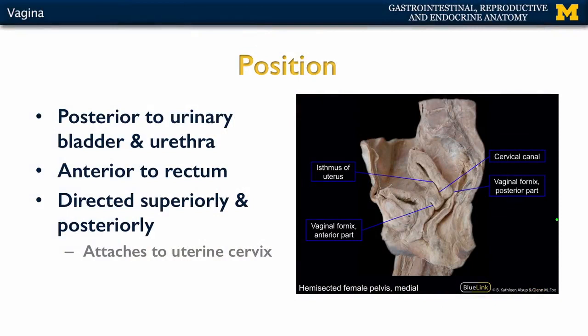Let's review the position — we've seen this image a few times. You have the bladder here, the uterus here, the rectum here, and right here is the vaginal opening, or the vagina — anterior to the rectum.